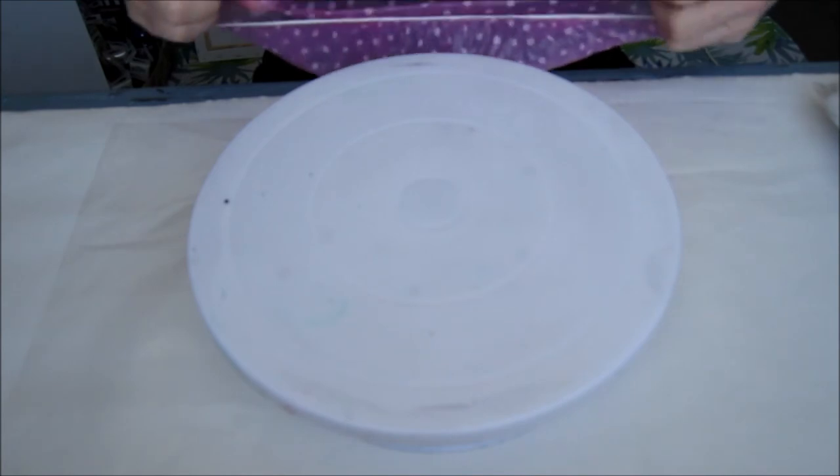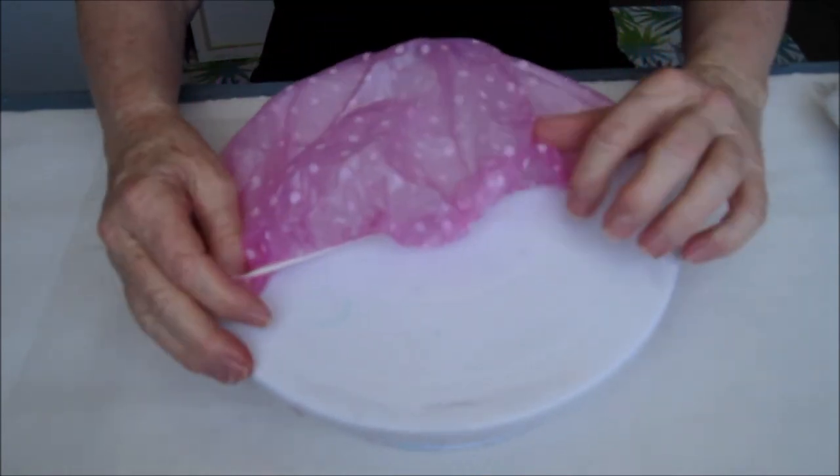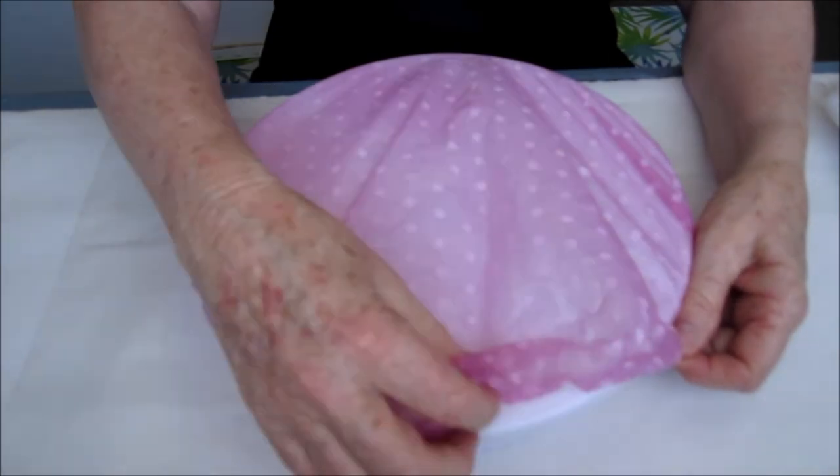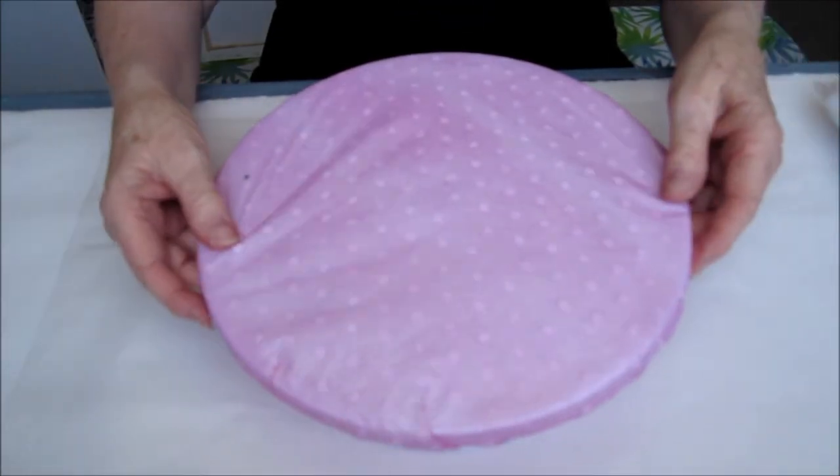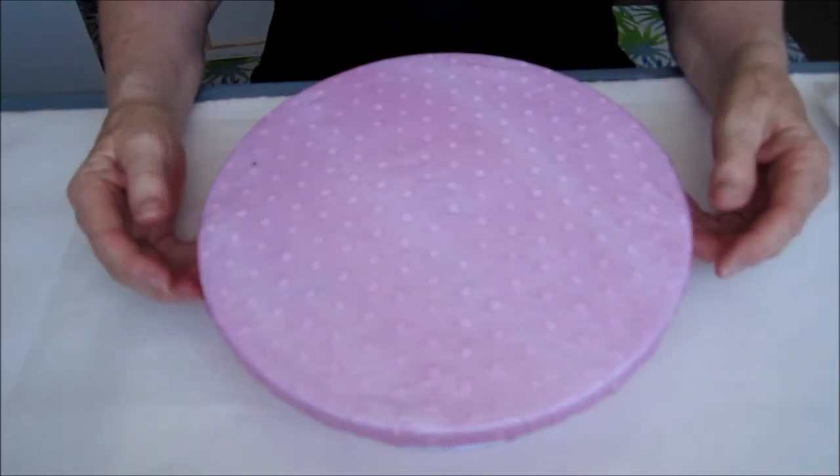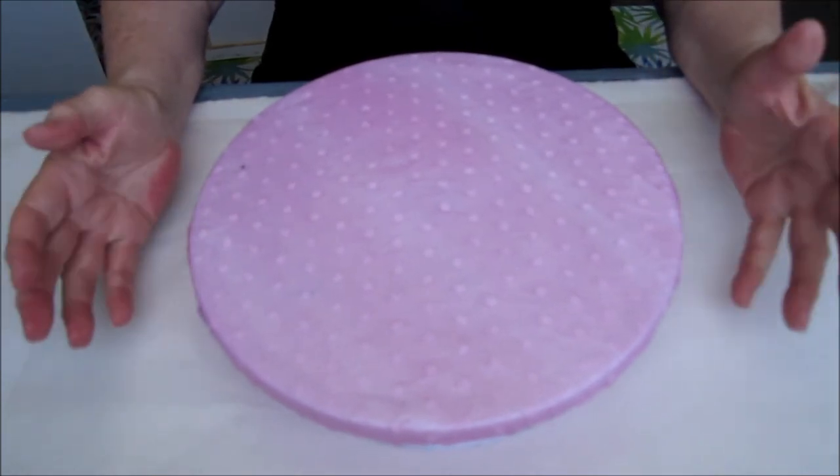I just pop one over my spinner and I find that that protects it while I am doing my painting, and when it's grubby enough I just remove it and dispose of it.